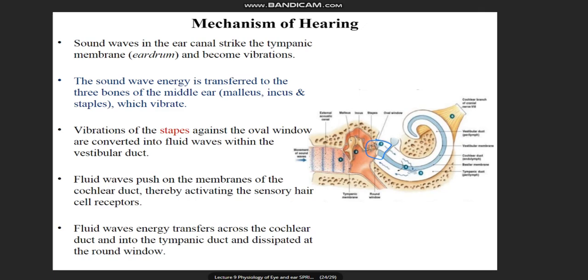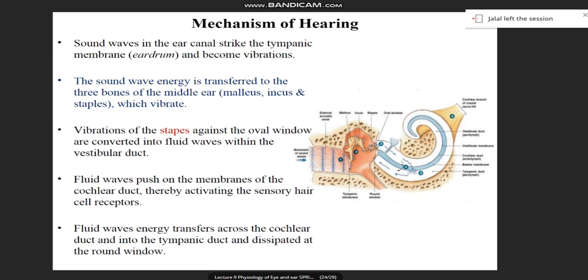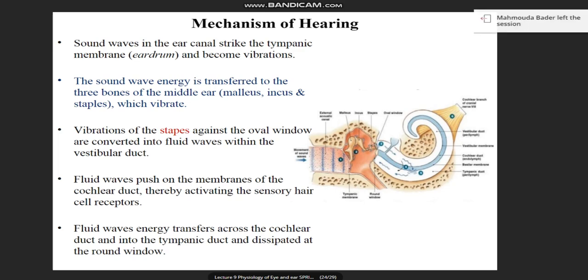Please look at the animation videos uploaded to Blackboard, as a verbal explanation alone is not sufficient. The waves created in the fluid cause the basilar membrane to move up and down. According to that movement, the hair cells rub against the tectorial membrane — the gelatinous membrane — and that is how activation takes place.